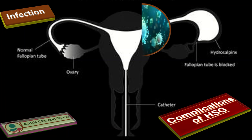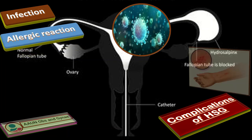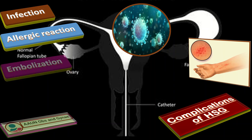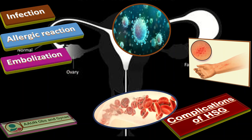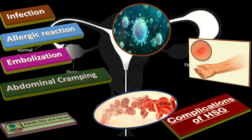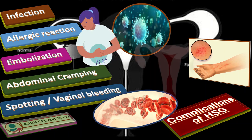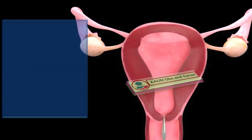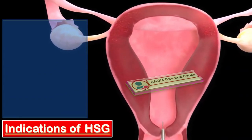The patient may present with different complications, including infection, allergic reaction to the materials used, embolization — meaning intravasation of materials into blood vessels — abdominal cramping, spotting, or vaginal bleeding.